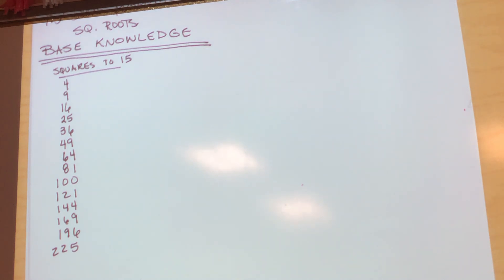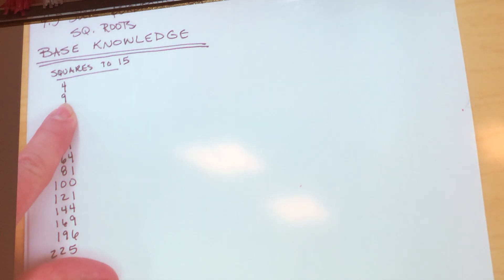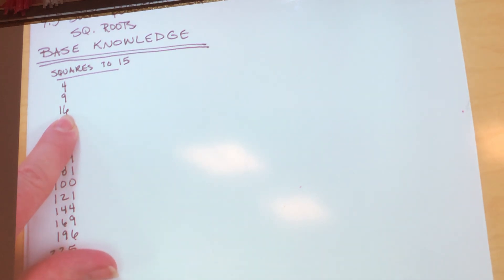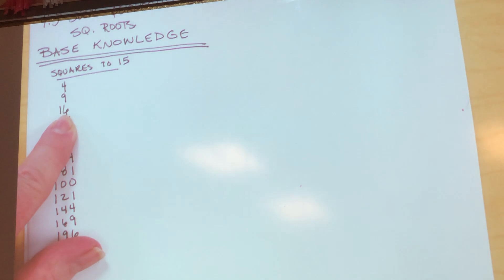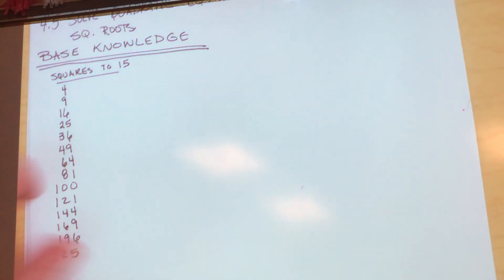Alex told us another way to memorize squares — she had to know them up to 30-something for UIL. Here's her method: take the difference between two consecutive squares you know, add two to it, then add that to the previous square. For example, 9 minus 4 is 5, plus 2 is 7, and 9 plus 7 is 16. It works for every one of them. That was free knowledge. It's pretty cool.